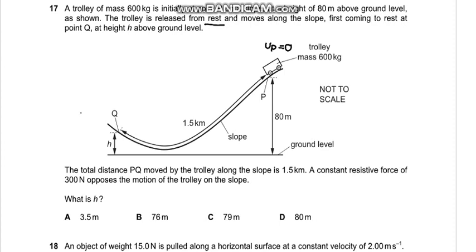At Q it comes to height H above the ground level. The total distance PQ moved by the trolley along the slope is 1.5 kilometers. A constant resistive force of 300 N opposes the motion of the trolley on the slope.